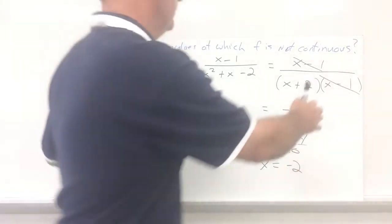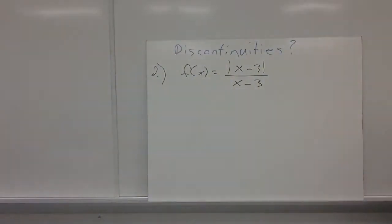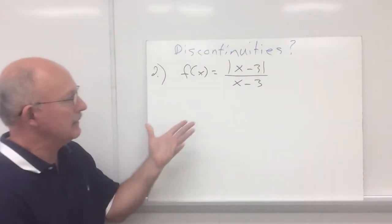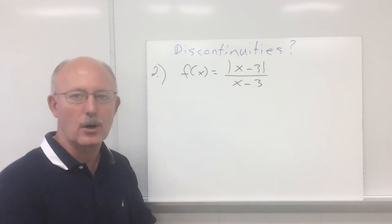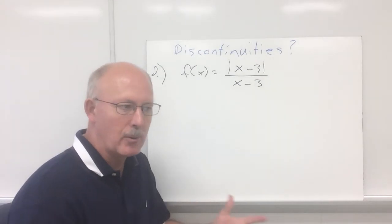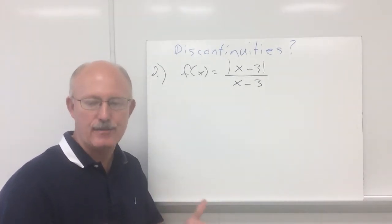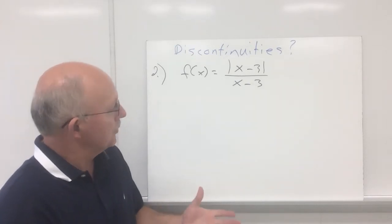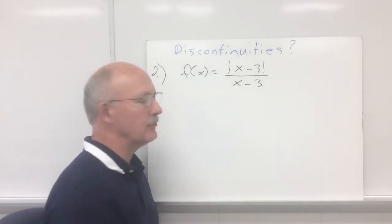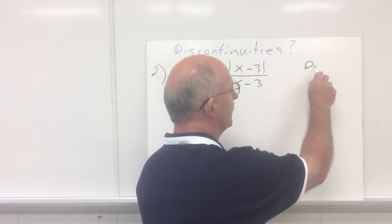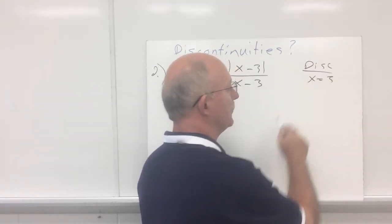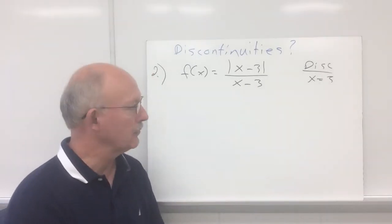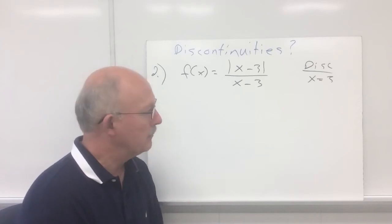Let's try another example. Are there any discontinuities in this particular problem? When we get in the class and start working on our homework, there'll be some functions like this where we ask you to determine whether or not there are any discontinuities. I'm just looking for the x values at which this function would not be continuous. Now there's one possible discontinuity I notice: the bottom of the fraction has x minus 3, so a possible discontinuity at x equal positive 3. If x is 3, you have 3 minus 3, which is 0, so there could be a hole or something there — it's a possible discontinuity. We don't know for sure, but that's where we need to check.